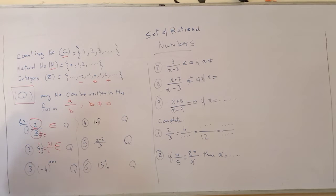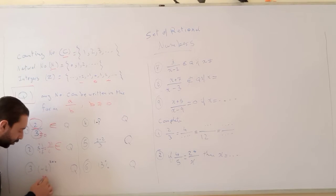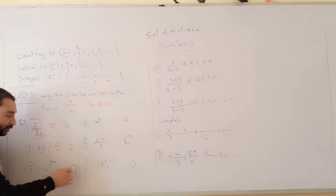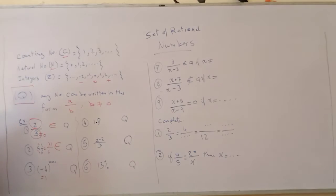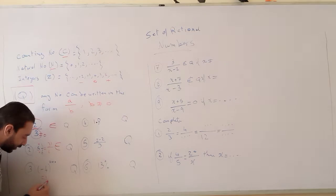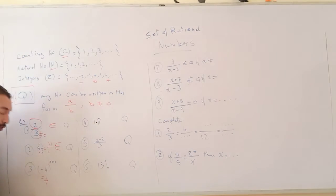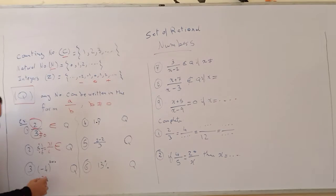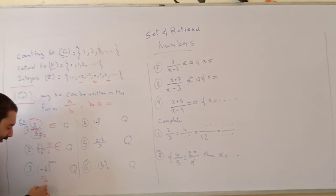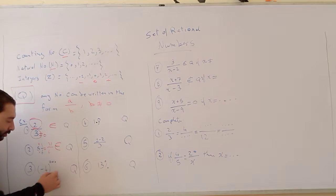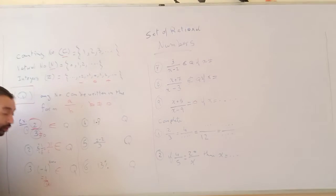Negative 4 to the power of 0. Anything to the power of 0 equals 1. Does 1 belong to Q? Yes, because we can write it in the form 1 over 1, which is A over B, and B — the denominator — is not equal to 0. So this belongs to Q.